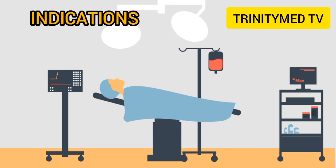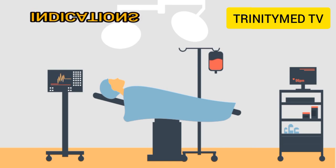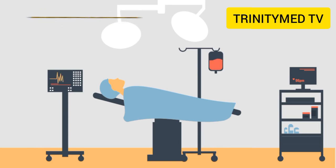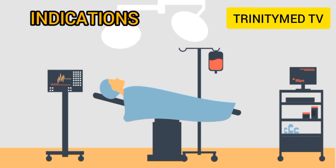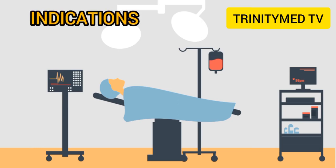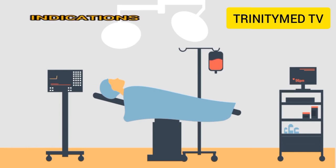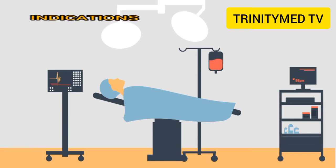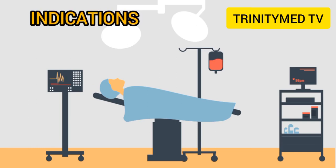Strict adherence is required for body canals or cavities normally free of microorganisms, such as the trachea, bronchus, urethra, bladder, kidney, pericardium, and peritoneum. Another indication is when the skin or mucous membranes are breached — for example, during surgery, insertion of IV lines, arterial lines, or lumbar puncture.